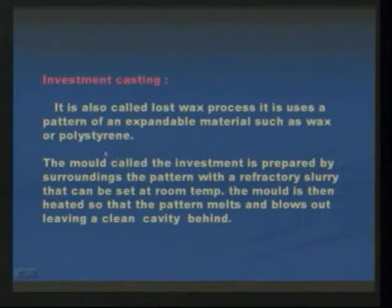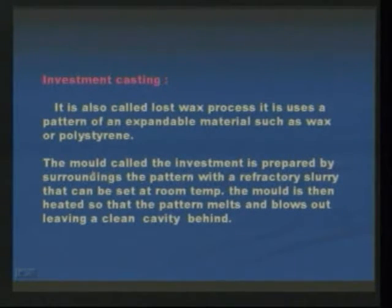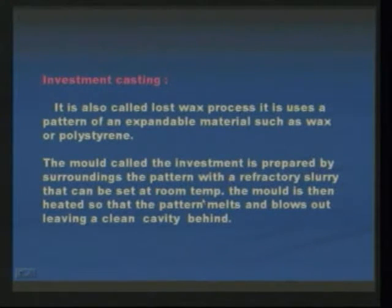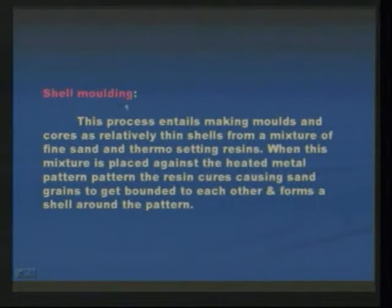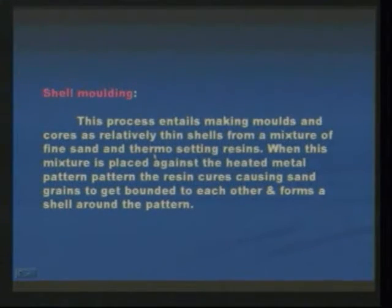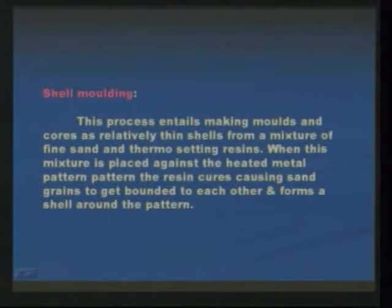The next one is investment casting, also named as the lost wax process. It uses a pattern of an expendable material such as wax or polystyrene. The mold, called the investment, is prepared by surrounding the pattern with a refractory slurry that can be set at room temperature. Next is shell molding — this process entails making molds and cores as relatively thin shells from a mixture of fine sand and thermosetting resins, using artificial sands mixed in proper proportions.